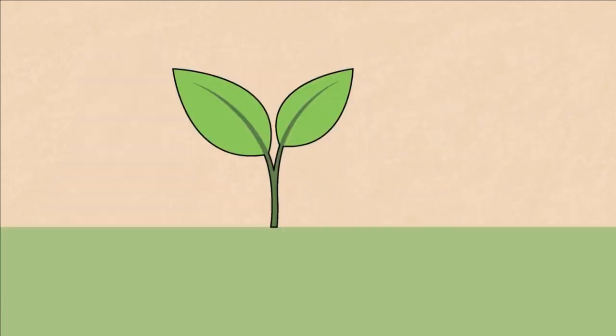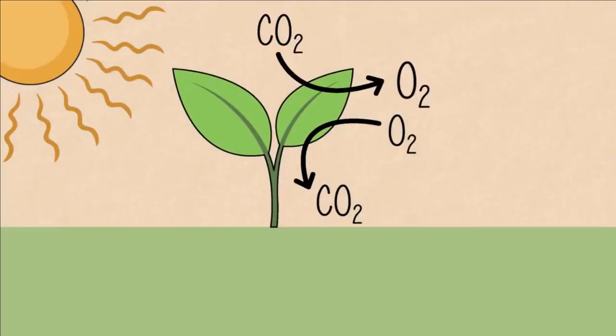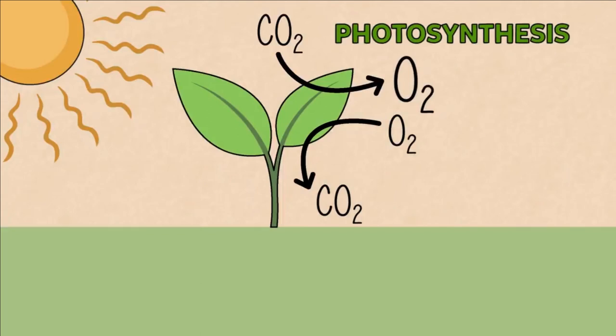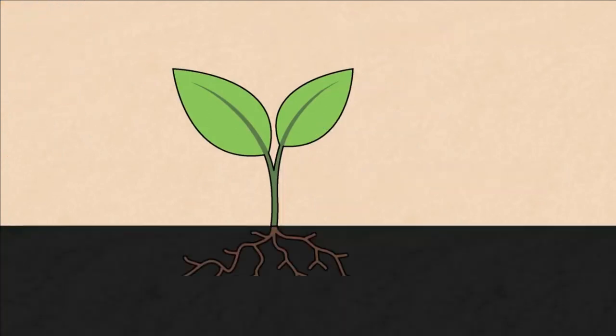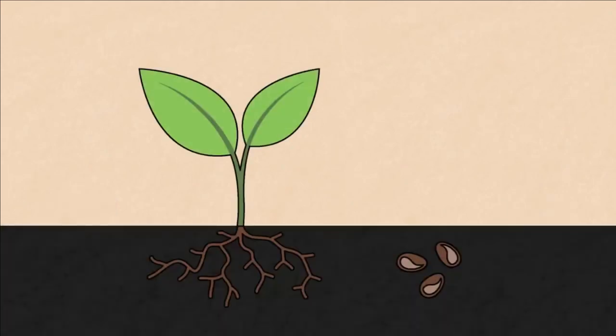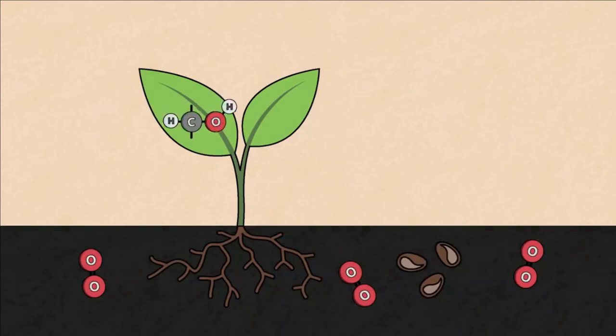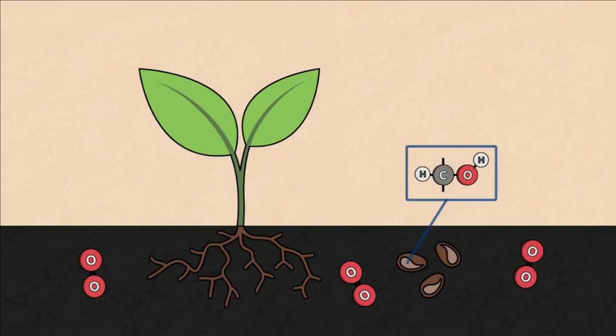Plants also respire, but you only notice it in the dark because in the sunlight they release more oxygen from photosynthesis than they use in respiration. But think of the roots and seeds which are hidden from the sun. Pause the video and think how roots and seeds get energy. The answer is that they need a constant supply of oxygen, which means that the soil must be full of air and not waterlogged. The roots get sugars sent down from the leaves, and seeds have enough of their own fuel supply until they put out green shoots and start making more.